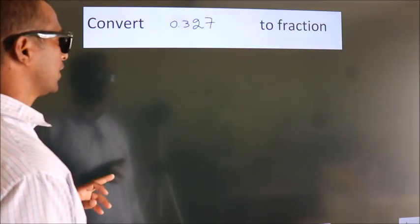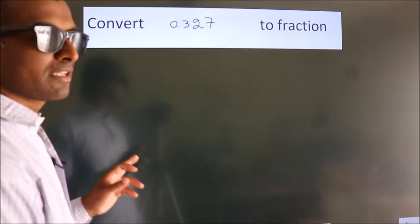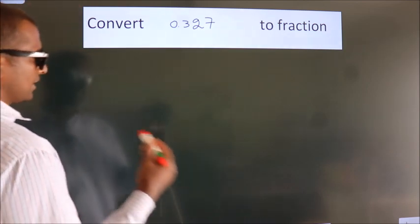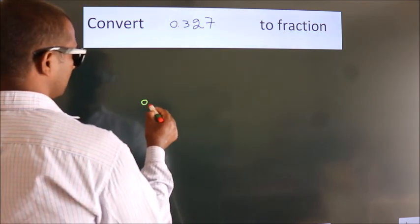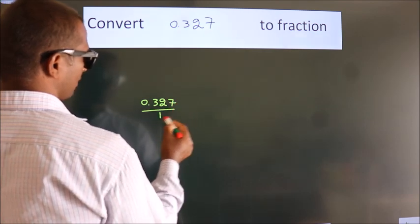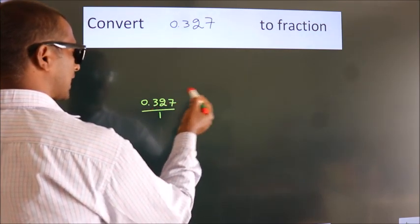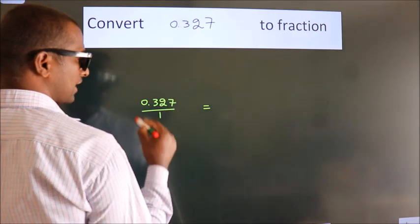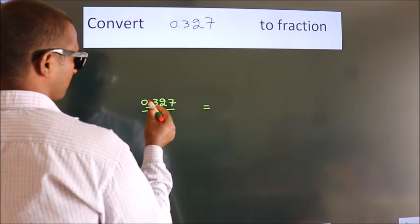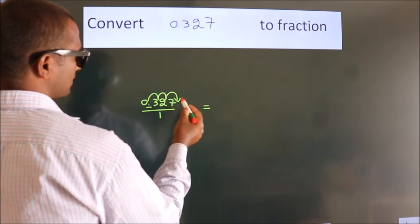Convert 0.327 to a fraction. How do we convert this? Given is 0.327. To convert this to a fraction, we have to move this decimal after 1, 2, 3 numbers.